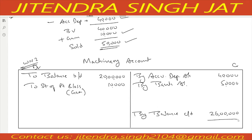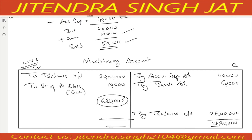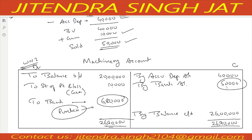Let's take out the balance: 26 lakh 90,000 minus 20 lakh 10,000 equals 6 lakh 80,000 remaining on the debit side. This means 6 lakh 80,000 is the purchase of machine, which will be recorded under investing activity. So both purchase and sale of machinery are recorded under investing activity.